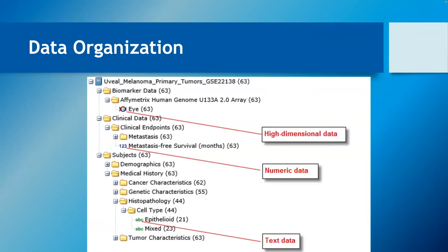You'll see that this looks like the familiar tree you see in i2b2. One difference in TranSMART is that we show the counts up front. TranSMART uses true counts — it's not a case of doing a query and getting an obfuscated number. TranSMART is complete trials; we know who was in the trial, and when you do analysis you want to see the real numbers.